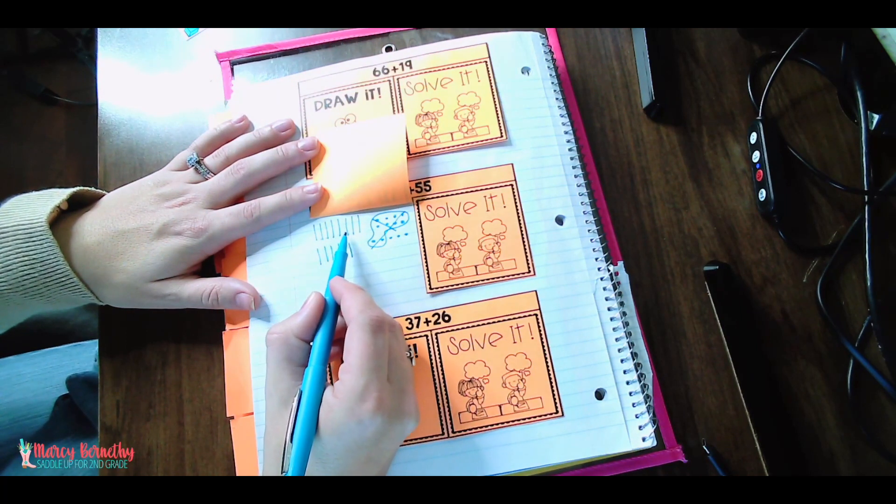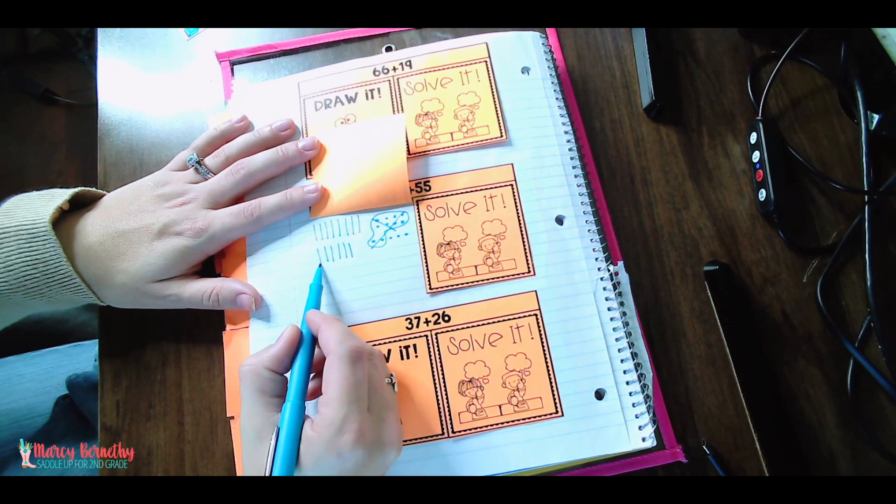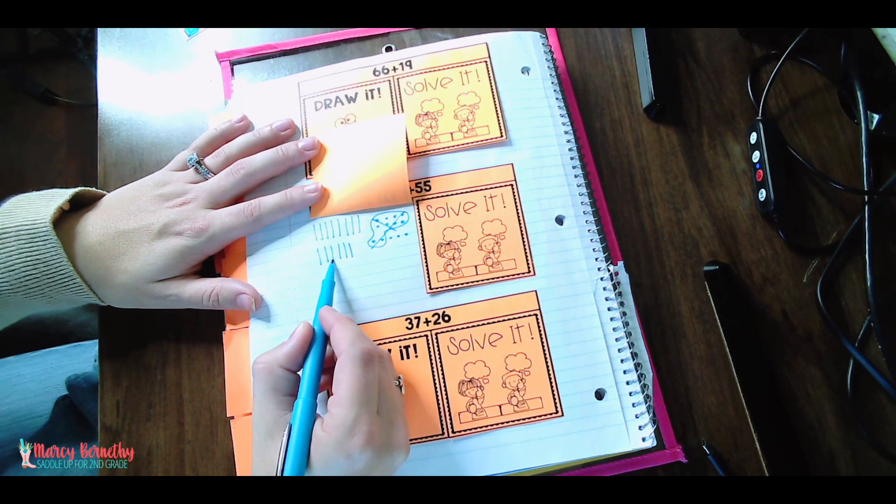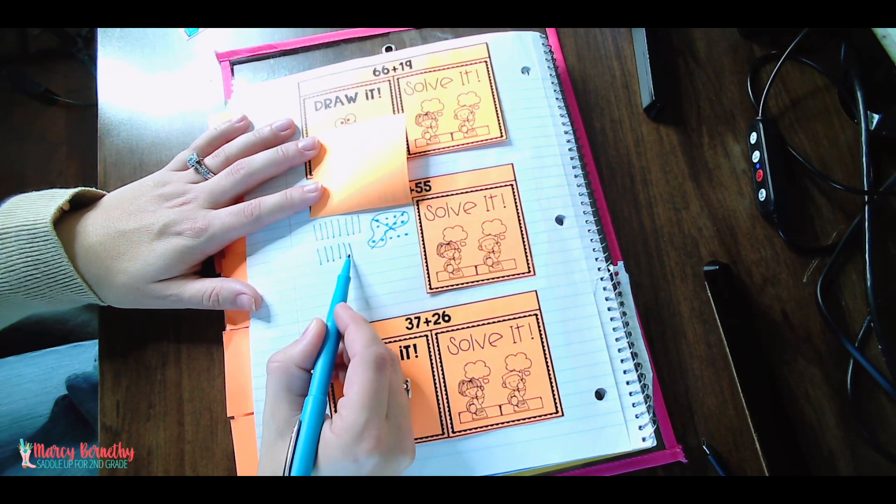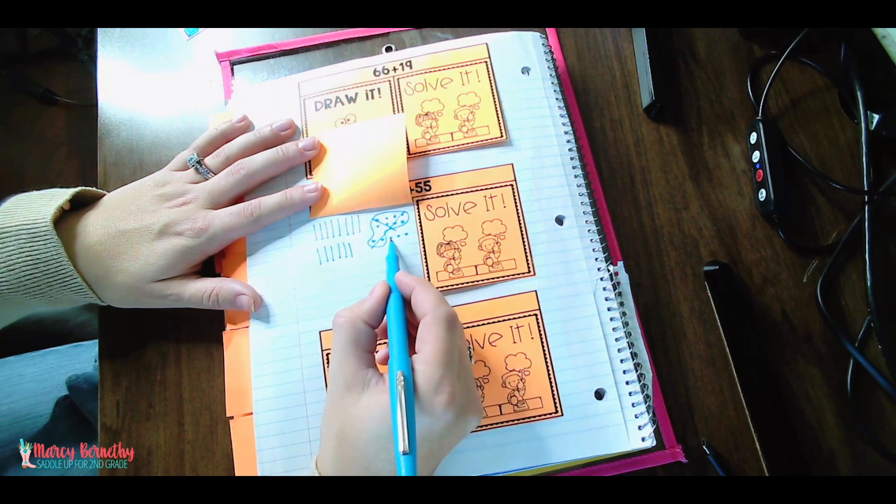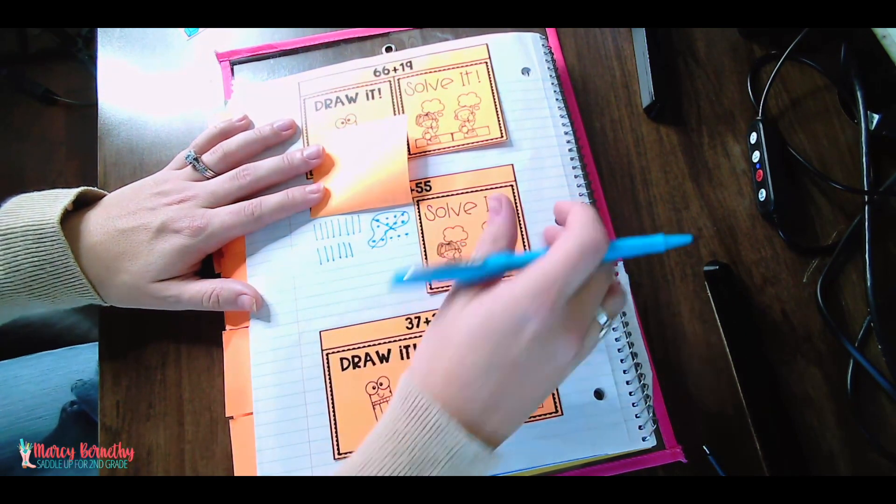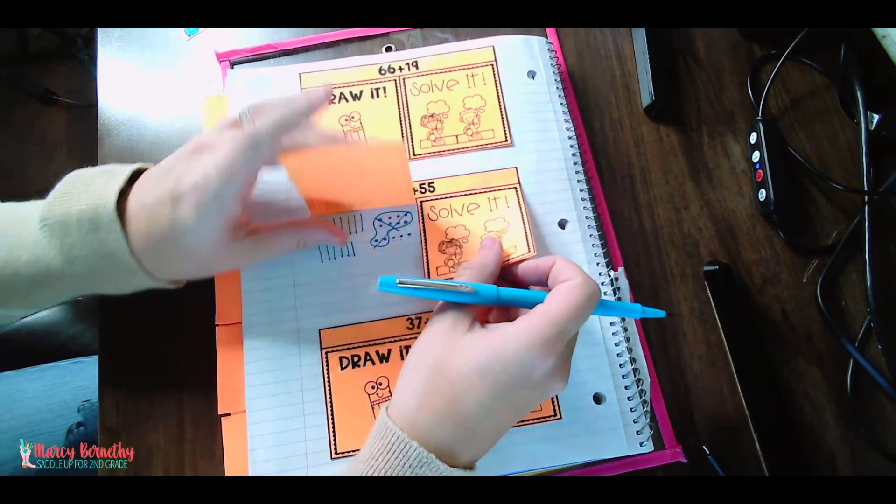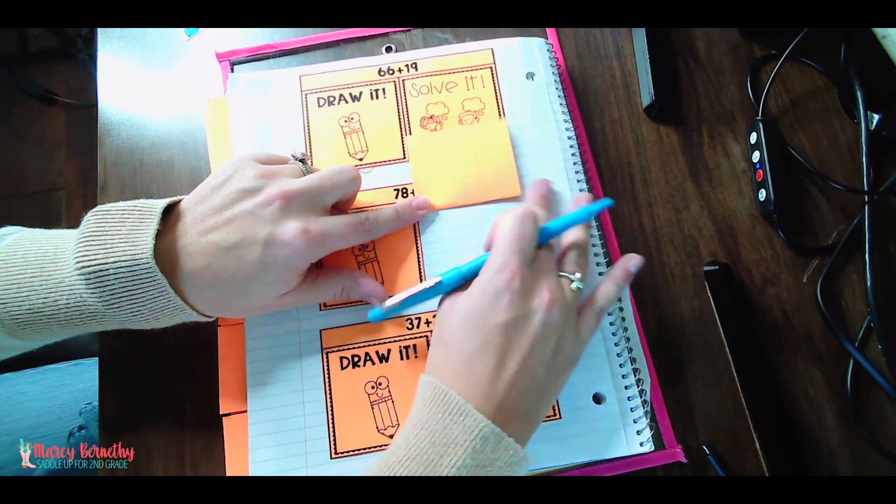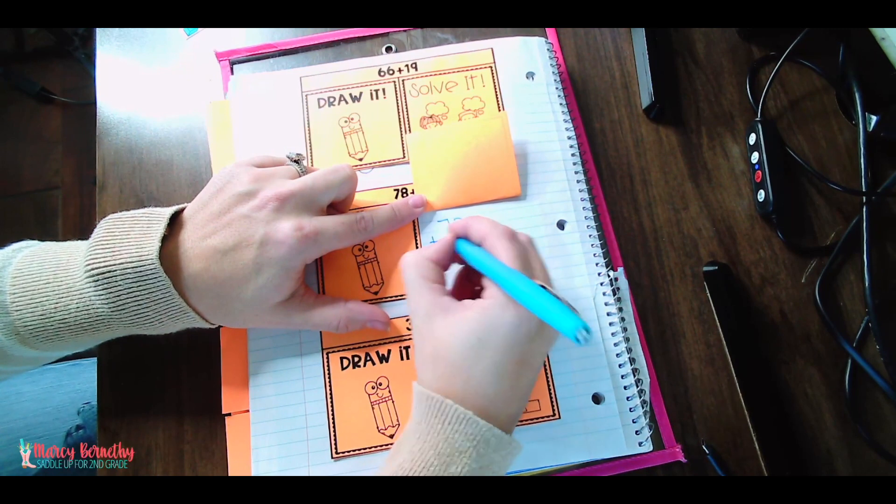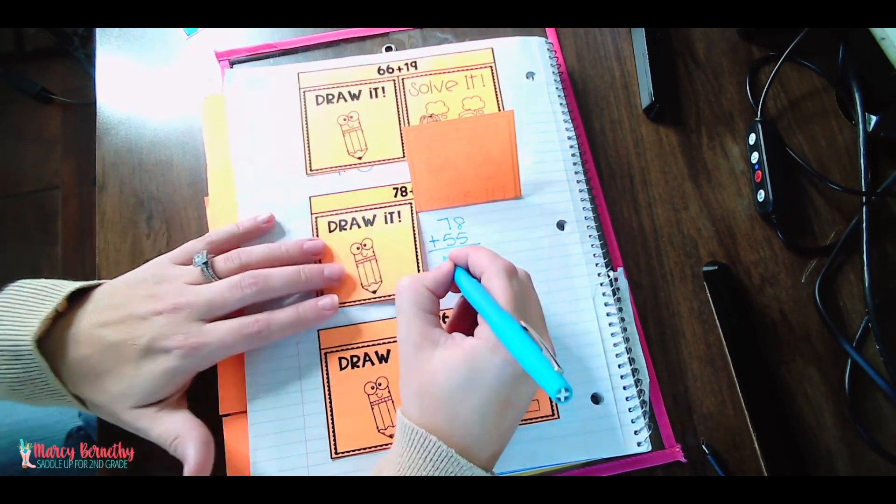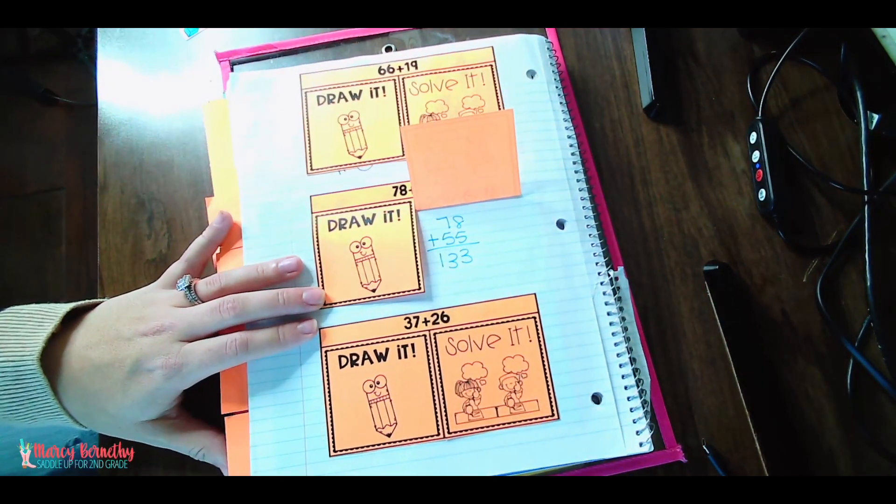And now they can count to solve for the sum. So they can count 10, 20, 30, 40, 50, 60, 70, 80, 90, 100, 110, 120, 130, 140, 141, 142, 143. So then under the solve it tab, they are going to write their problem vertically equals 133.